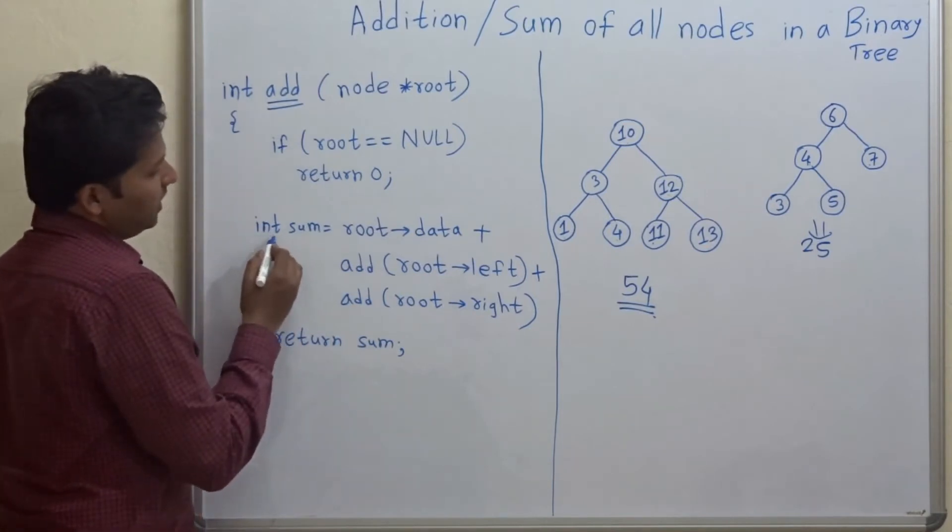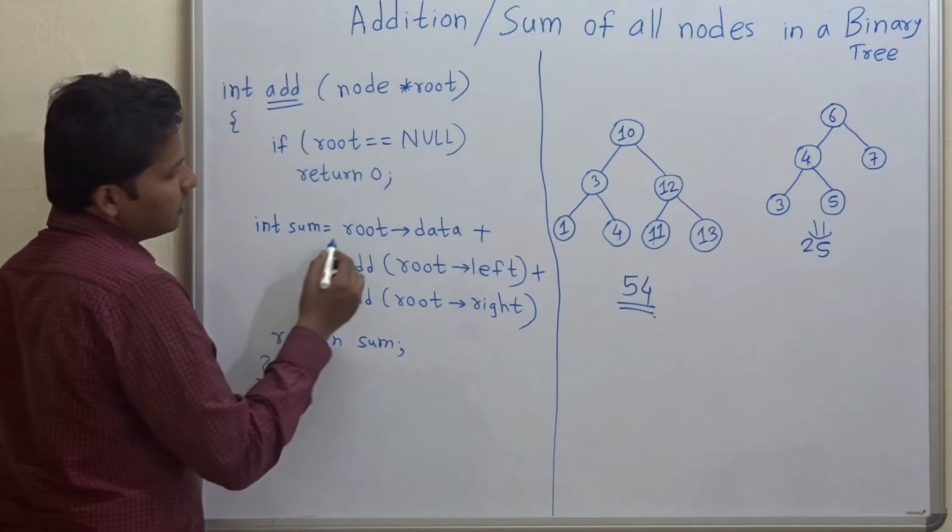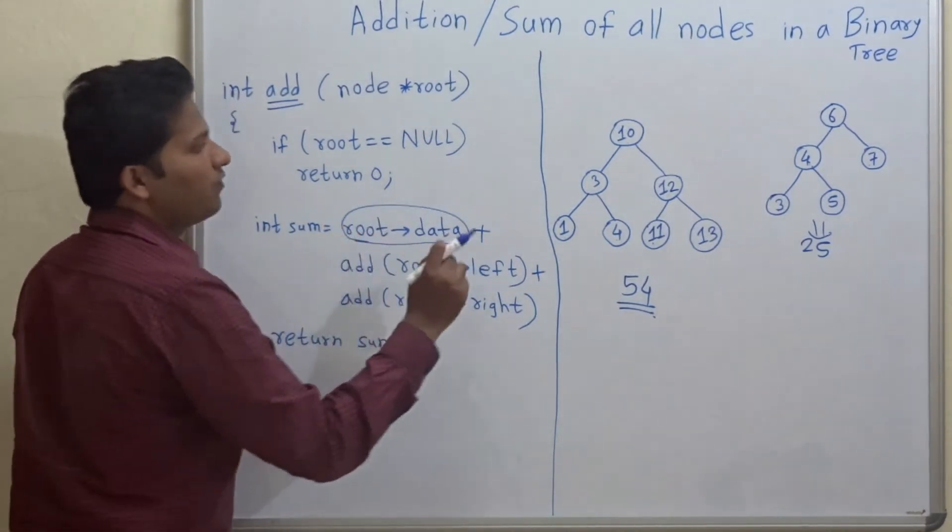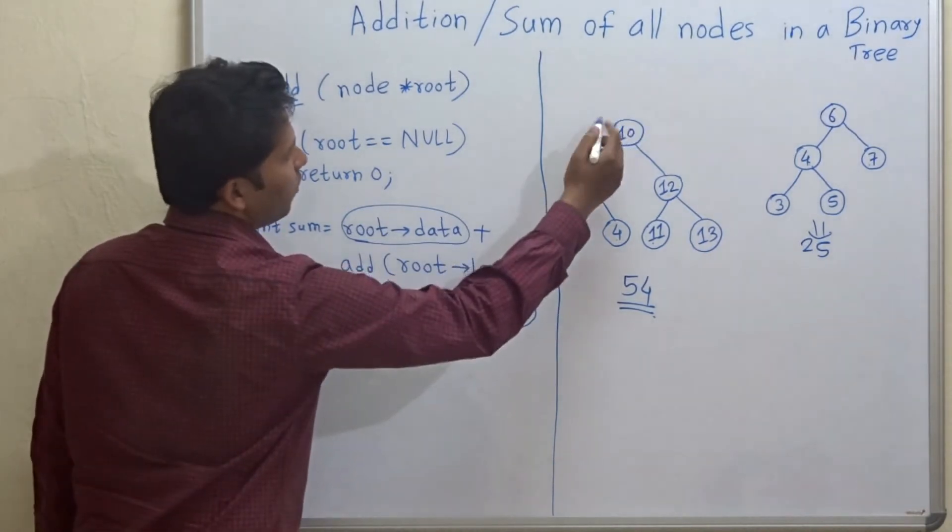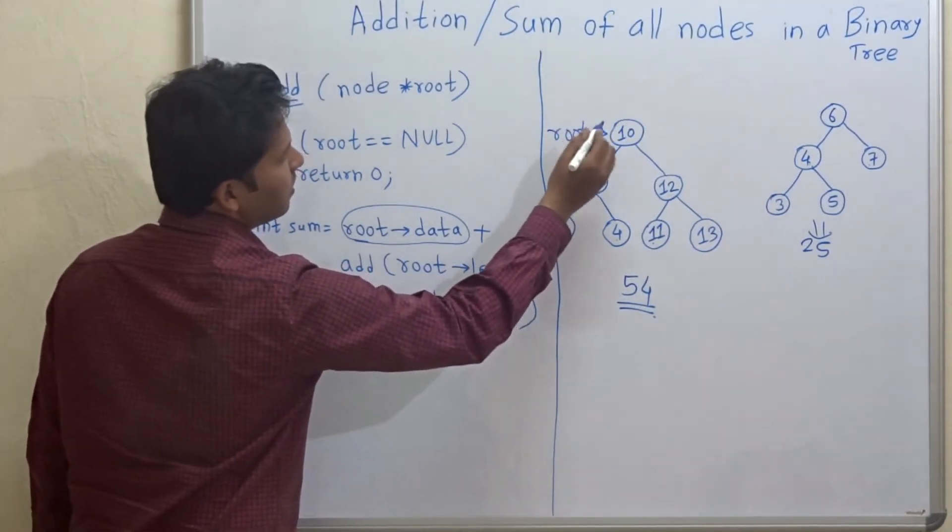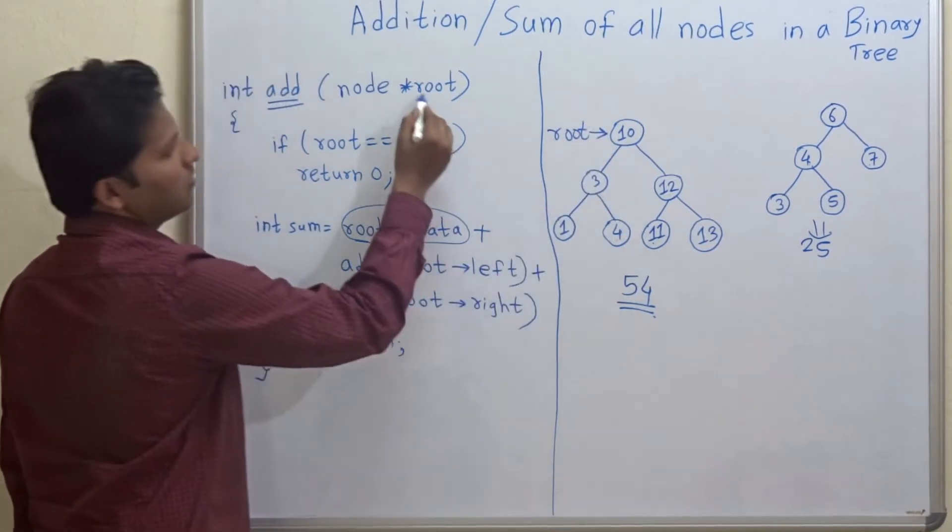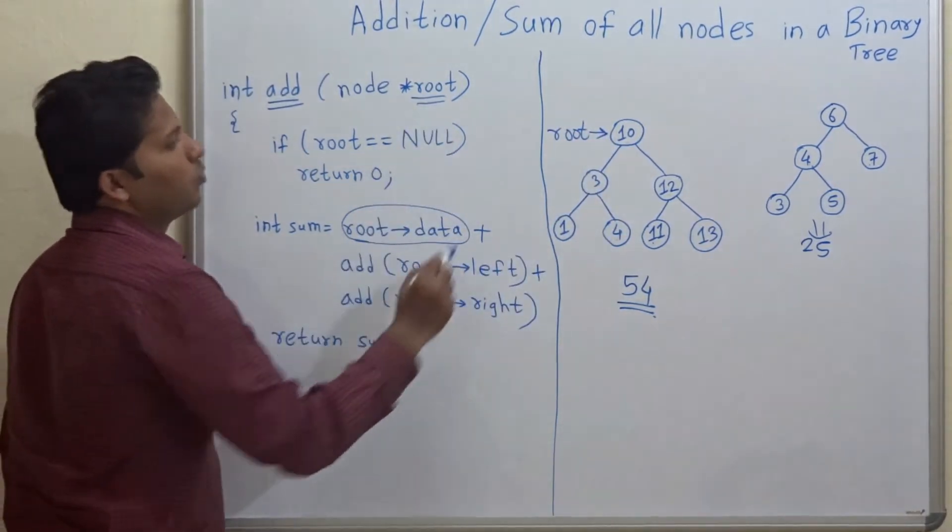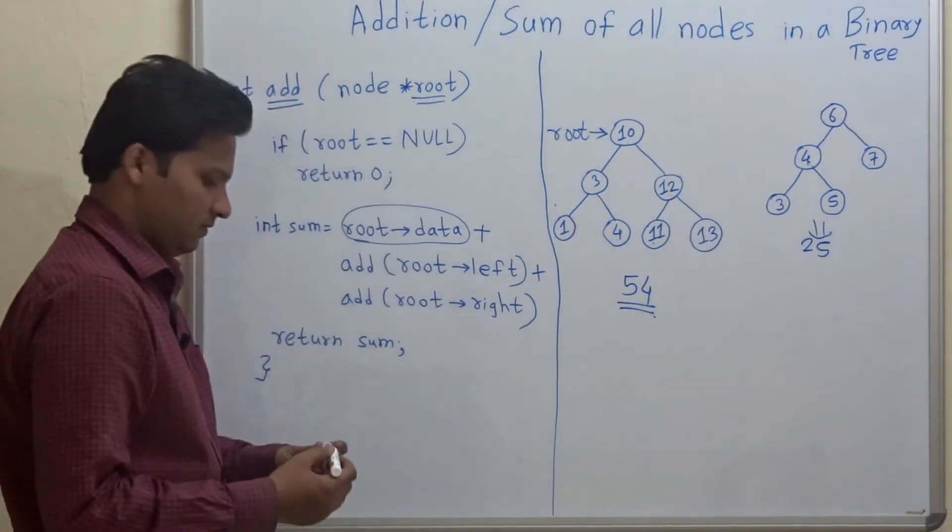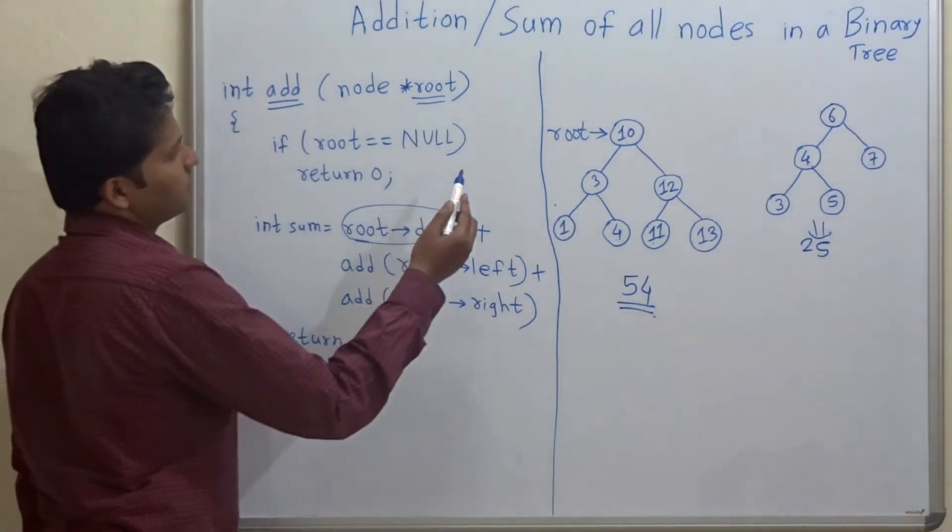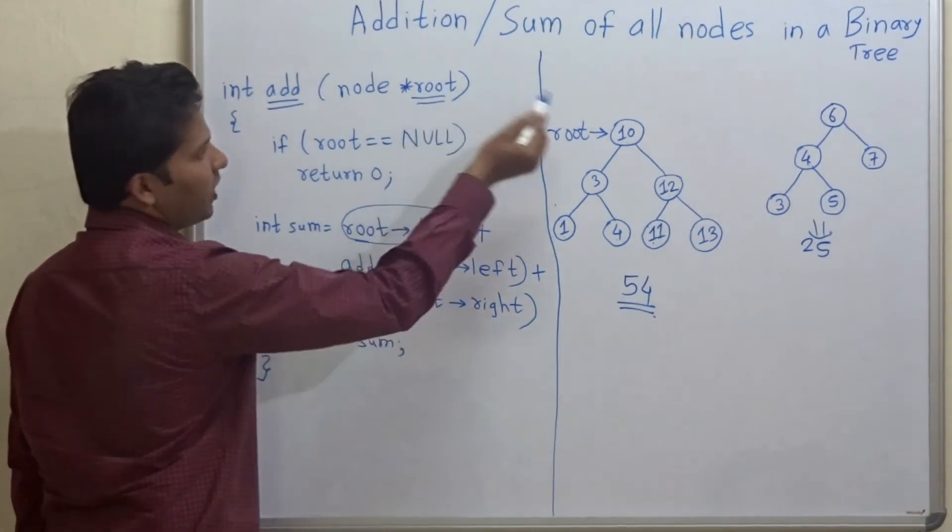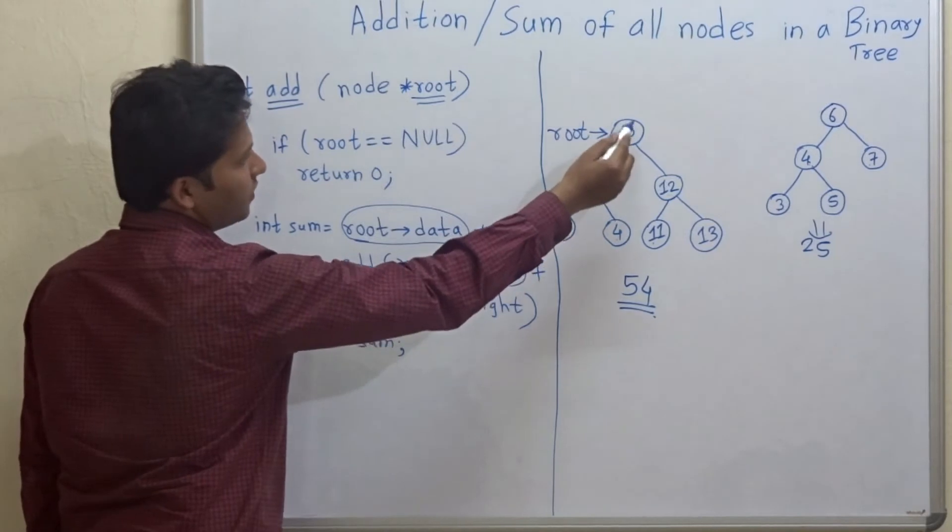Now let's check here integer sum is equal to root data. So the data of that node. So for example, our root variable points to the root of this tree.